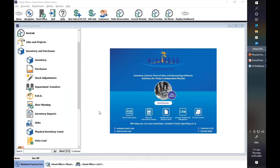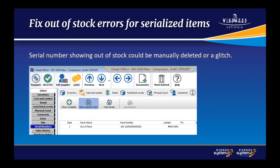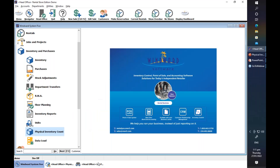The next topic is fixing out-of-stock errors for a serialized item. There are some instances when you find that your serial number has an out-of-stock status. Serial numbers with out-of-stock status could be due to being manually deleted or it could be a glitch. For example, you receive the serialized item through a PO, but when you check the item inventory, you can't find it. You can go to the Serial Numbers tab, click Show Sold or On Hold, and see if you can find the serial numbers showing out of stock.